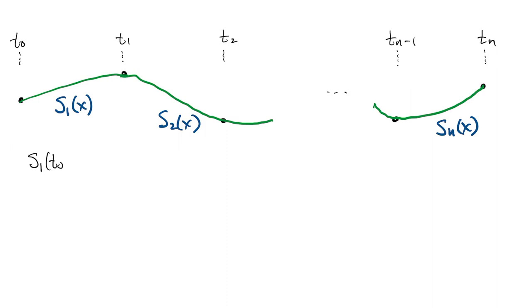Each sk has to interpolate the given data at both ends of its sub-interval. So in each sub-interval we can write out two conditions.